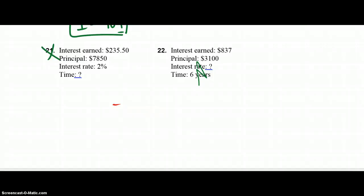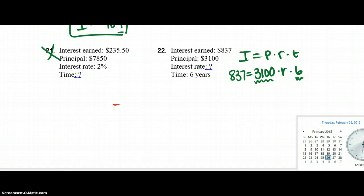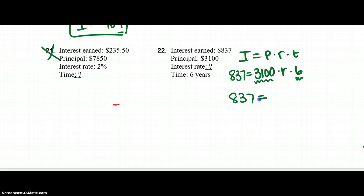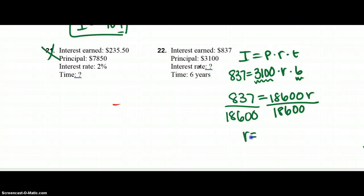22. I equals P, R, T, same thing. I equals P times R times T. The rate is what I'm trying to find. Keep in mind this is also years, so I'm good to go there. So I have 837 equals 3100 times R times 6. Then I'm multiplying 3100 by 6, so I can get one number on the other side. So I get 837 equals 18600R. And then to solve for R, you have to divide both sides by 18,600. And you get R is equal to 0.045. You have to swoop, swoop, and your answer is 4.5%.